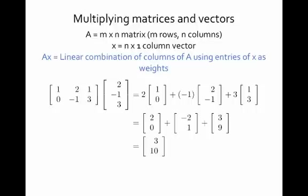Everything below that line is simple vector arithmetic: taking 2 times each entry of 1, 0; negative 1 times each entry of 2, negative 1; and 3 times each entry of 1, 3; then adding the results. That's what we mean by multiplying a matrix by a vector — it's a linear combination of the columns of the matrix using the entries of the vector as weights.